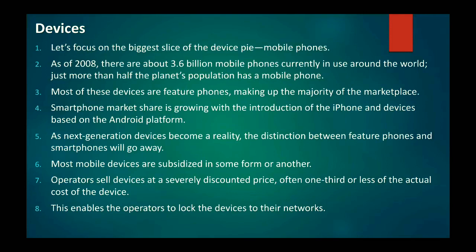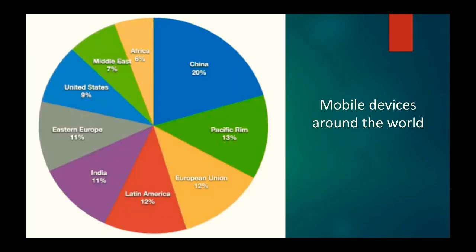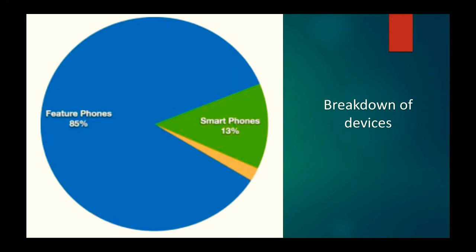Smartphone market share is growing with the introduction of the iPhone and devices based on the Android platform. These two platforms are working very well right now. As next-generation devices become a reality, the distinction between feature phones and smartphones will go away. When the book was written, 85% of people were using feature phones and only 13% were using smartphones.